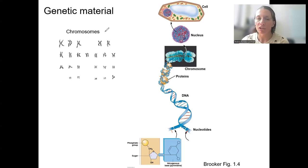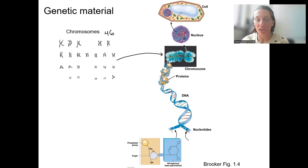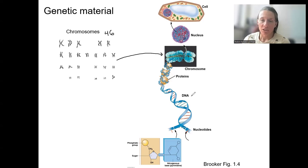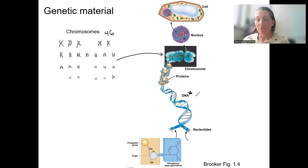In humans, we have 23 pairs — 46 chromosomes — and this is packaged-up DNA. Here's one chromosome, and the chromosome is inside the nucleus, inside of our cell. A chromosome is packaged-up DNA. DNA contains genes: segments of nucleotides that provide our genetic information. Nucleotides are polymers of nucleic acids.